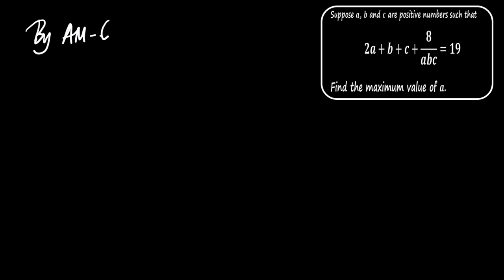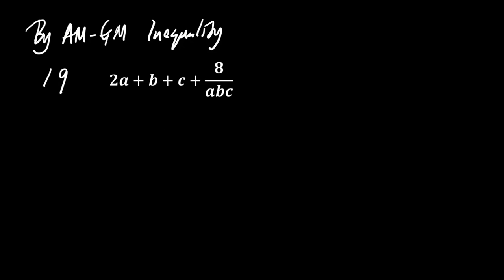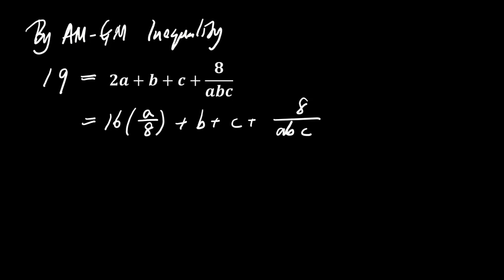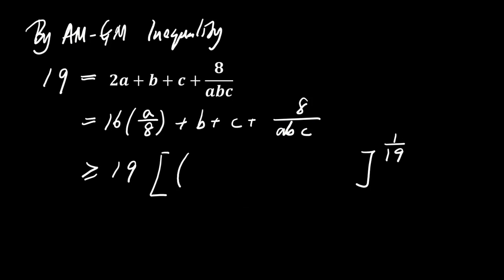Let's use the AM-GM inequality to solve this problem with a second method. We are given 19 = 2A + B + C + 8/(ABC). This can be rewritten as 19 = 16 · (A/8) + B + C + 8/(ABC). Using the AM-GM inequality, we know that this is greater than or equal to 19 times the product of (A/8), B, C, and 8/(ABC), all raised to the power of 1/19.